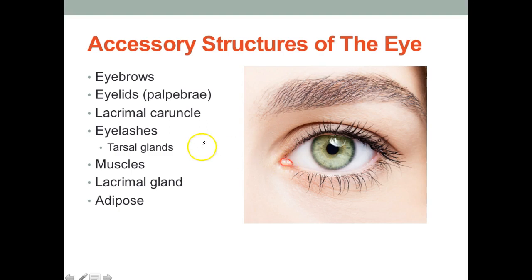In between the eyelashes you're going to have tarsal glands. Tarsal glands are modified sebaceous glands that produce a lubricating substance to prevent the eyelids from sticking together. There are also muscles around the eye that help move it, which we'll cover on the next slide.